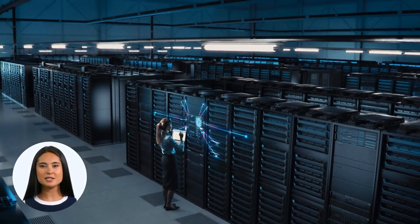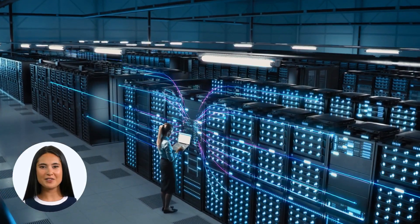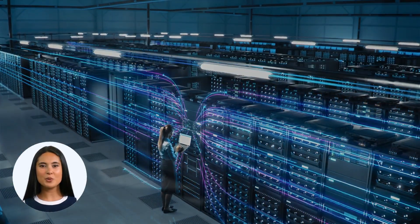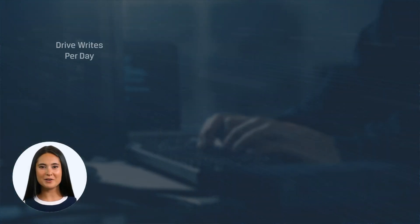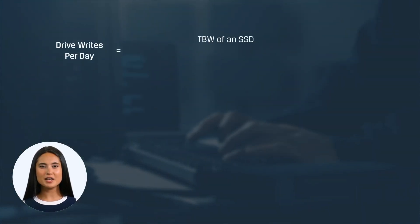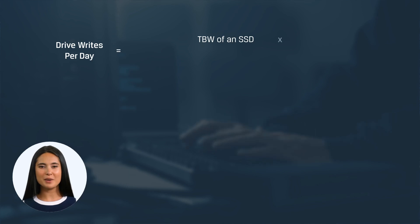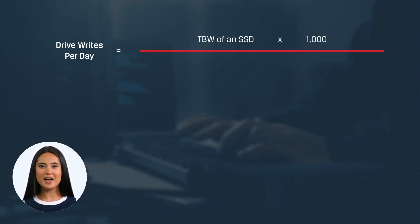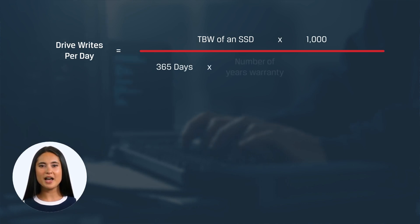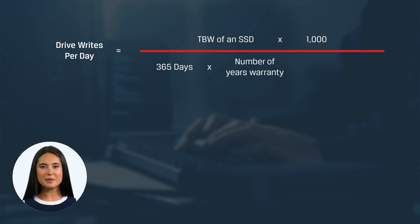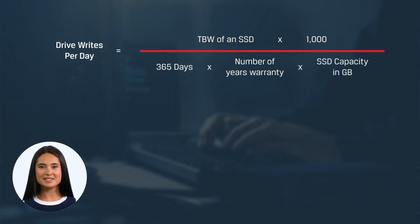To work out the drive writes per day value of an SSD, we use the following calculation: the terabytes written value of an SSD multiplied by 1,000. This number is then divided by 365 days multiplied by the number of warranty years, and then multiplied again by the SSD capacity in gigabytes.